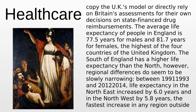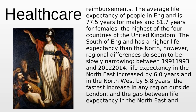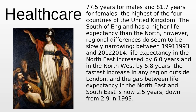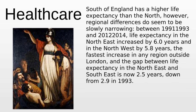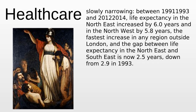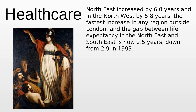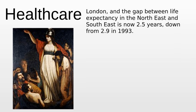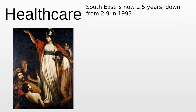The average life expectancy of people in England is 77.5 years for males and 81.7 years for females — the highest of the four countries of the United Kingdom. The south of England has a higher life expectancy than the north; however, regional differences do seem to be slowly narrowing. Between 1991 and 2014, life expectancy in the north-east increased by 6.0 years and in the north-west by 5.8 years, and the gap between life expectancy in the north-east and south-east is now 2.5 years, down from 2.9 in 1993.